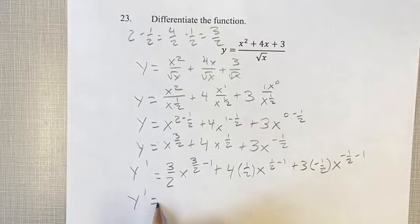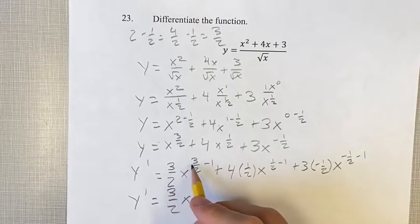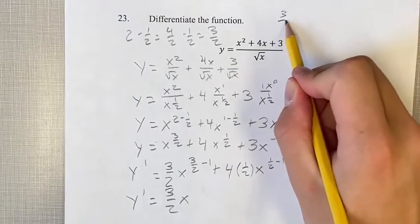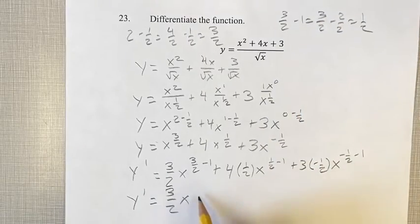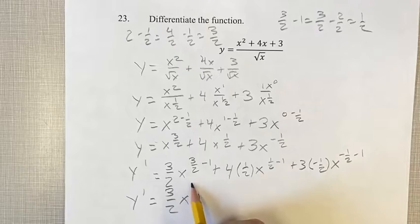And then simplify this, and you get your derivative. 3 halves, x to the 3 halves minus 1 is 3 halves minus 2 halves, to 1 half. So plus, x to the 1 half,